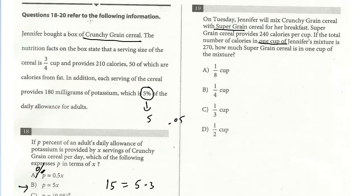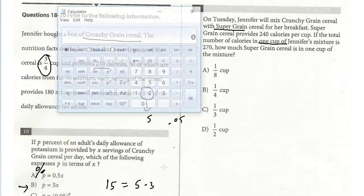And so instead of just eating the crunchy grain that we saw here, she's now mixing it with super grain. Super grain is 240 calories per cup, and we want one cup. So the first step is, you really want to pay attention because crunchy grain serving is not a cup. Crunchy grain serving is three quarters. So you first have to get the number of calories based on a full cup. And so you would just multiply that by four-thirds.